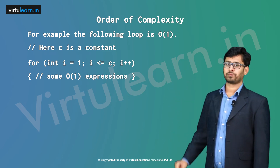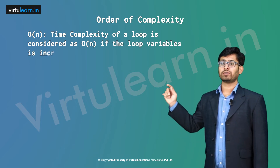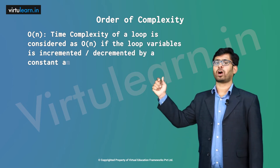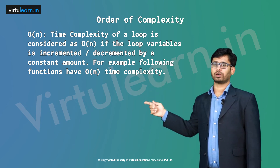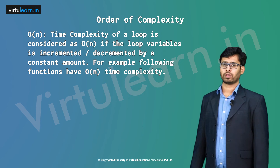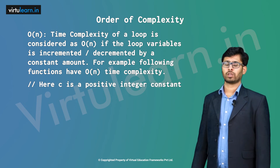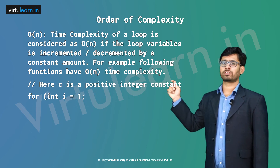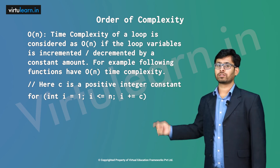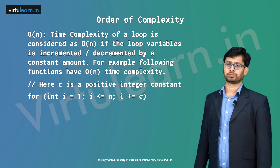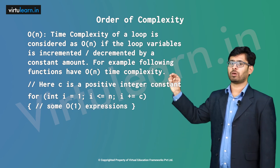Next is O(n). The time complexity of a loop is considered O(n) if the loop variable is incremented or decremented by a constant amount. For example, the following functions have O(n) time complexity. Let c be a positive integer constant: for(int i = 1; i <= n; i += c), which means i = i + c, with a sum of O(1) expressions inside the block.